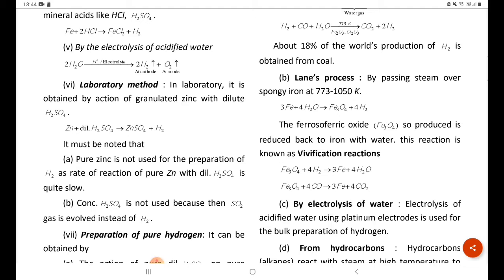Fe3O4 plus 4 H2 gives 3 Fe plus 4 H2O. Fe3O4 plus 4 CO gives 3 Fe plus 4 CO2.